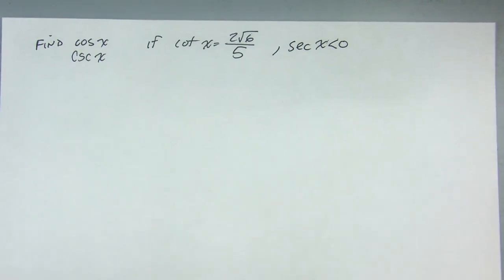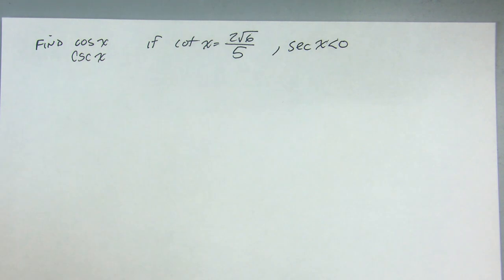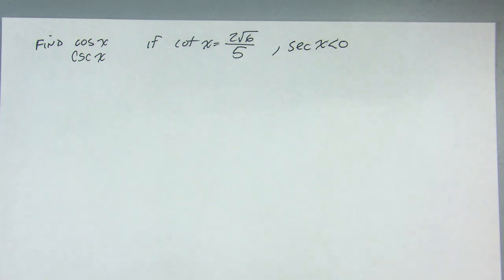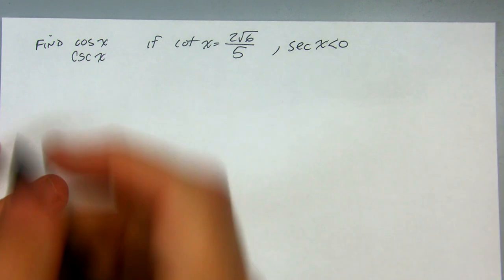This is the second problem where you have to find cosine x and cosecant x if the cotangent of x is equal to 2 radical 6 over 5, and you know that secant of x is less than 0.